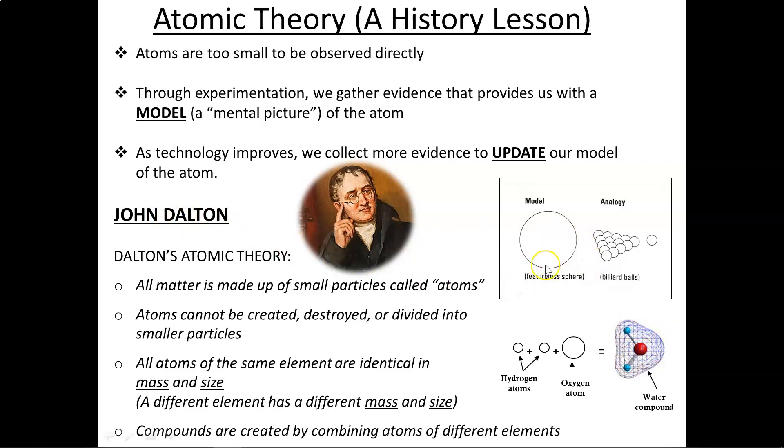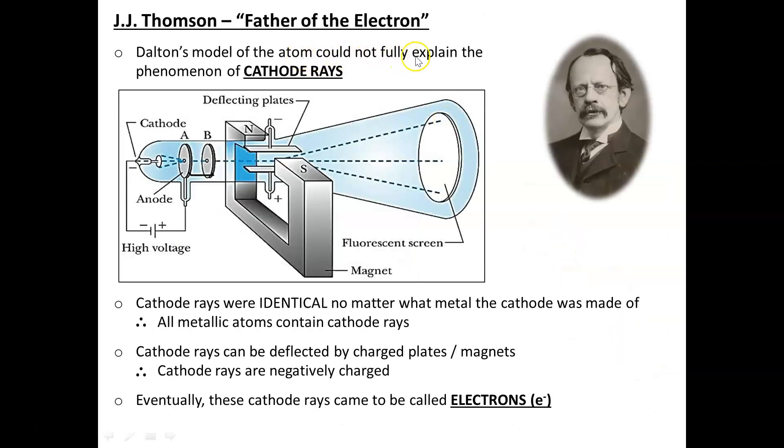Unfortunately, John Dalton's model of the atom was a little simplistic and could not fully explain the phenomenon of cathode rays. At the time, electricity was still fairly brand new and scientists loved to experiment with it. One such experiment was using a cathode ray tube. They would first vacuum out all the air in this glass tube and then apply a very high voltage to these metal electrodes. In so doing, a stream of negatively charged particles was fired out.